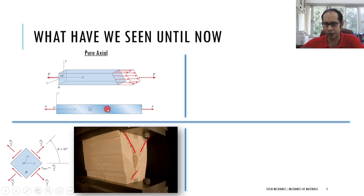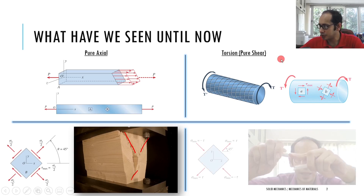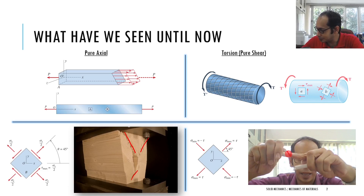We have also seen this concept for torsion. If you take a small element within the body inclined and perpendicular to the longitudinal axis, it is in pure shear. For the same body, in our famous chalk experiment, we also saw that the failure plane angles occurred at 45 degrees. These are the special cases.